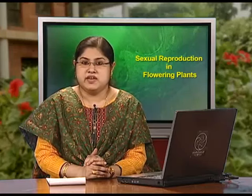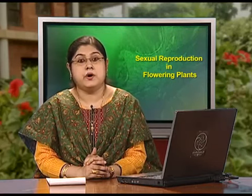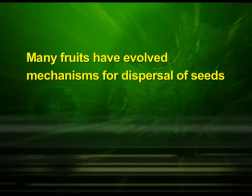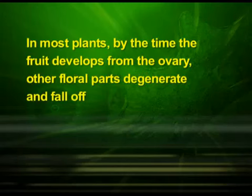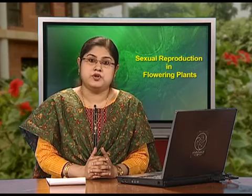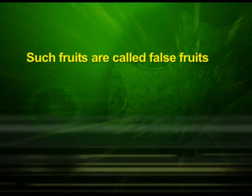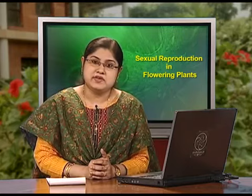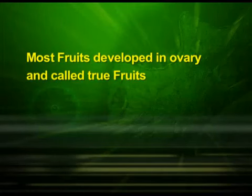The fruits may be fleshy, as in guava, orange, mango, etc., or may be dry, as in groundnut and mustard. Many fruits have evolved mechanisms for dispersal of seeds. In most plants, by the time the fruit develops from the ovary, other floral parts degenerate and fall off. However, in a few species such as apple, strawberry, cashew, etc., the thalamus also contributes to fruit formation. Such fruits are called false fruits. Most fruits, however, develop only from the ovary and are called true fruits.